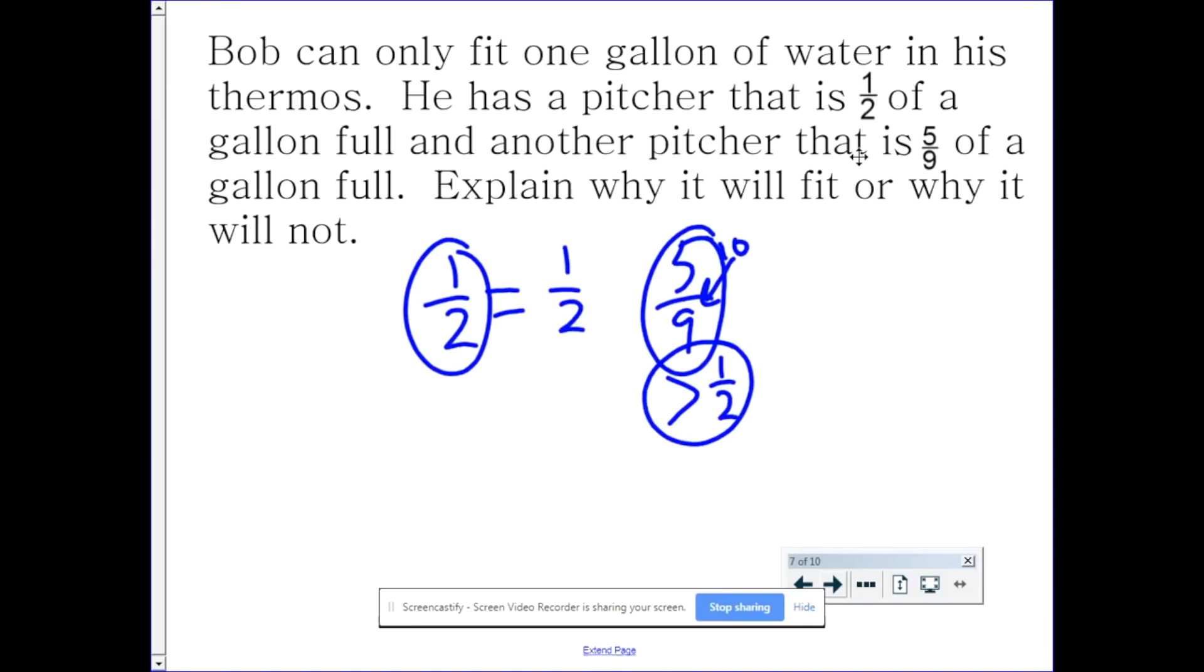So to recap, you can determine the reasonableness of an answer by knowing whether or not the fractions are greater than or less than half. And I'm giving you two strategies to figure that out. Look at both fractions, determine whether they are larger or smaller, and that will give you a good idea as to whether your answer is going to be larger or smaller than one whole.